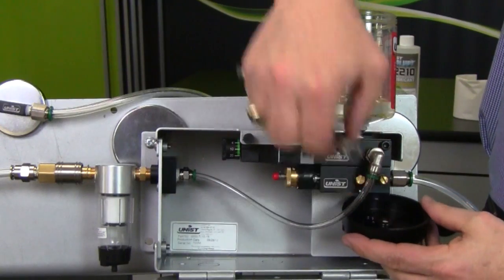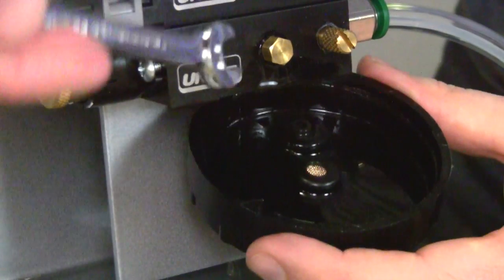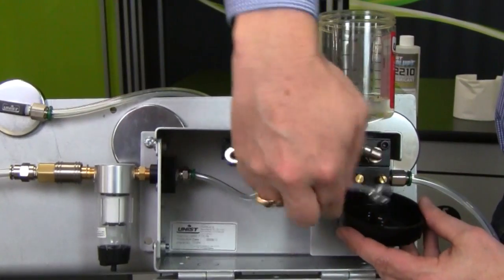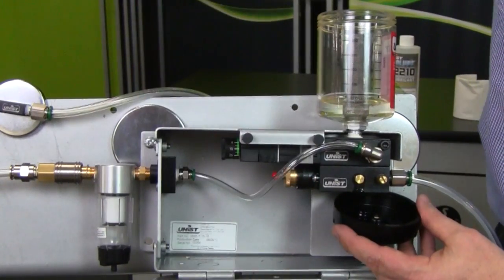You're going to want to put something under there to catch it. Once it's flowing freely, as you can see there, we want to tighten that back up. Now you don't want to over-tighten this hex, just nice gentle snug. There's a nylon gasket on there.